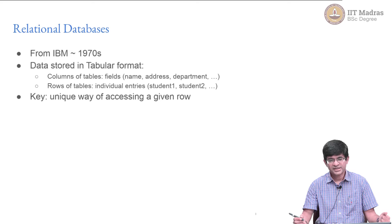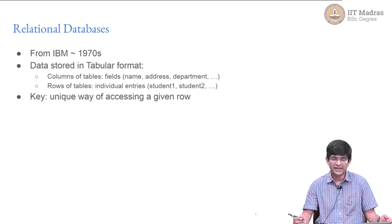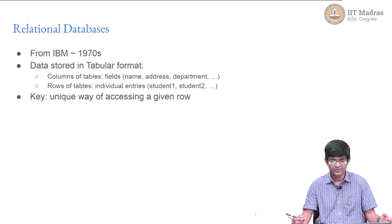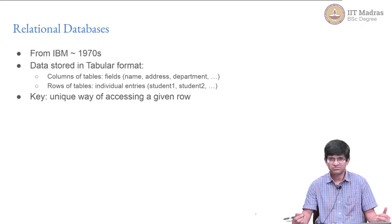Relational databases originated from work done at IBM in the 1970s. They essentially store data in a tabular format — there are columns in tables, each column corresponds to a field within some kind of structured data object, and there are rows which correspond to individual entries, such as multiple student records. Rows are sometimes called records, columns are called fields, and so on.